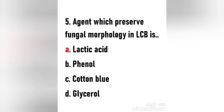Next question: The agent which preserves fungal morphology in LCB is — lactic acid, phenol, cotton blue, or glycerol? The right answer is option A, lactic acid. LCB stain contains phenol, which kills the organism; lactic acid, which preserves fungal structure; and cotton blue, which stains the chitin found in the fungal cell walls. The agent which preserves fungal morphology in LCB is lactic acid.